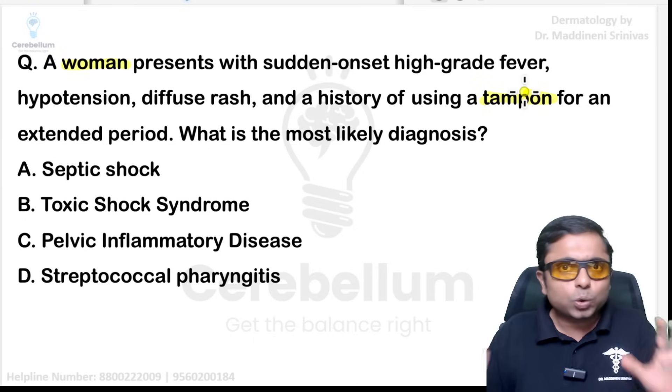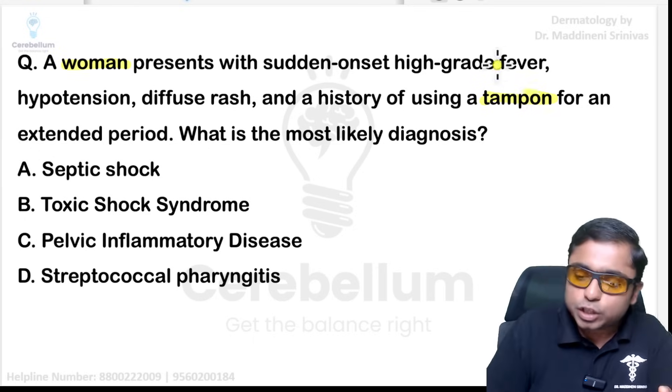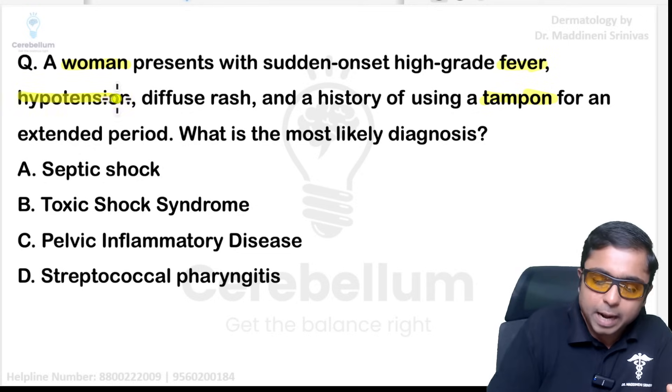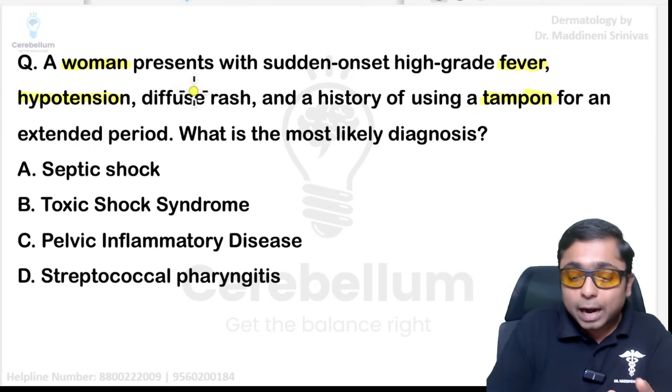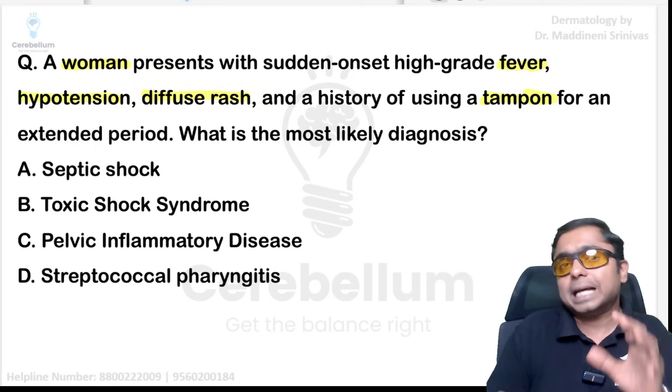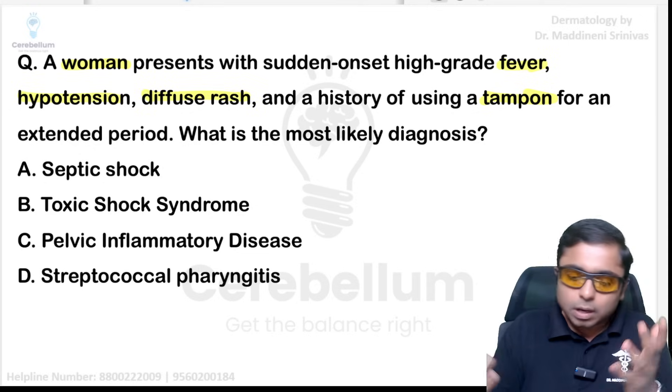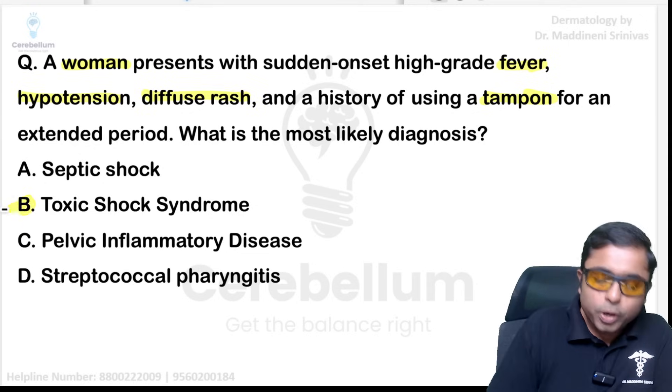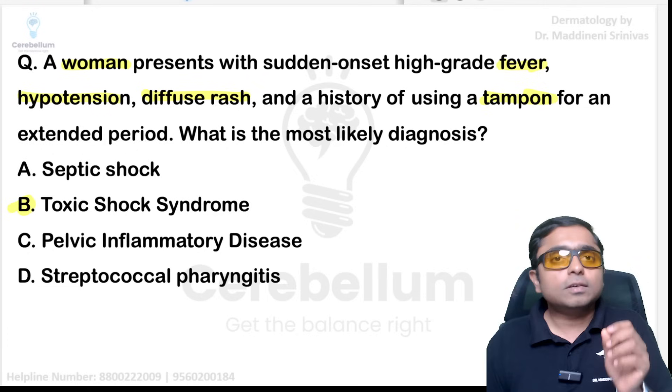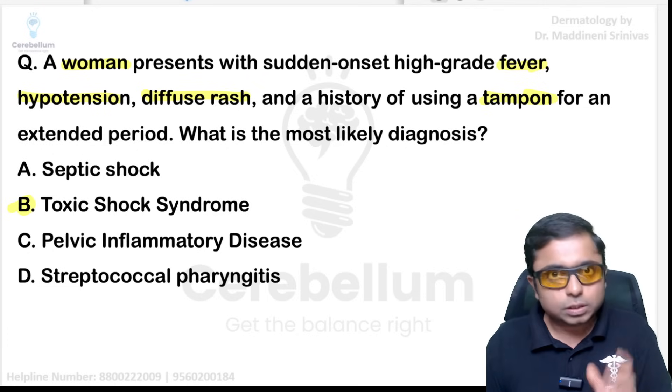Next: a woman with tampon use — the clues of high-grade fever, hypotension, and diffuse rash on the skin all point towards the diagnosis of toxic shock syndrome.